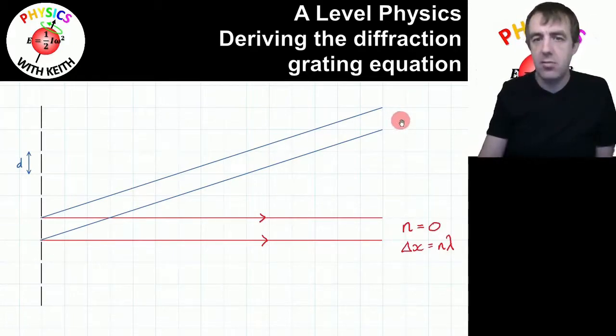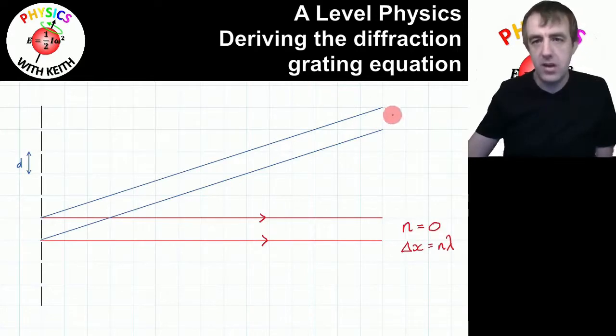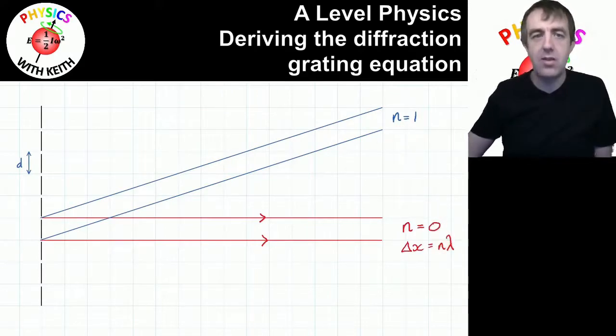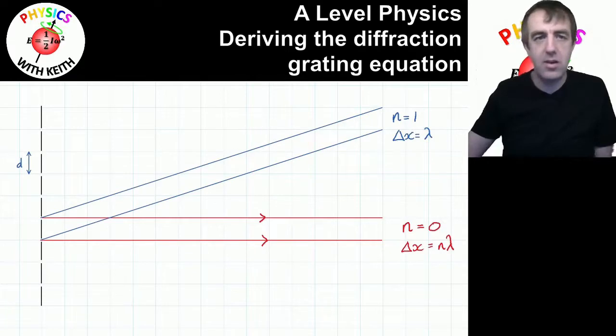And if this is the second bright spot, what we can call the first order, n equals one, absolutely no relation whatsoever to Star Wars, but the first order there, we would say that the path difference is therefore one wavelength. The path difference here is equal to one wavelength, whereas the path difference here is equal to zero.